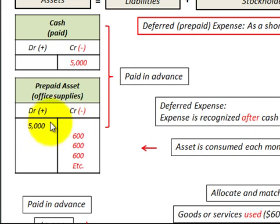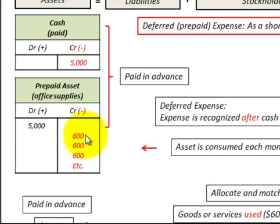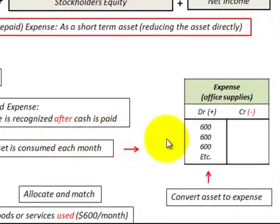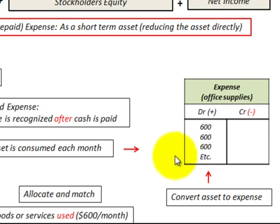So we have these paid for. Now as time goes on, we use or consume these prepaid assets — supplies in this case. What I used here is consuming at the rate of $600 per month. So we keep crediting prepaid assets by reducing that amount, and then the corresponding debit entry would be to the expense, where we actually increase the expense by $600. That is exactly what we did here for the prepaid asset.